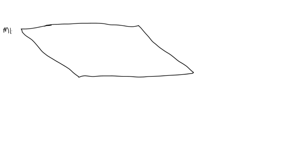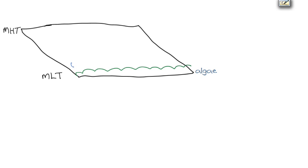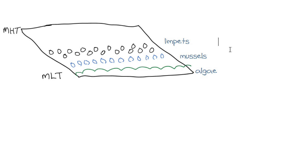Where I live, this could be drawn like this. If we imagine this is a piece of rocky shore: this is the mean high tide mark, and this is the mean low tide mark. Our tidal variation sweeps up and down this approximately twice a day. At the very bottom of this area, we have algae. Above this, we have a zone of many mussels. Above this, we have a zone of limpets. And finally, near the top, we have a lot of barnacles.